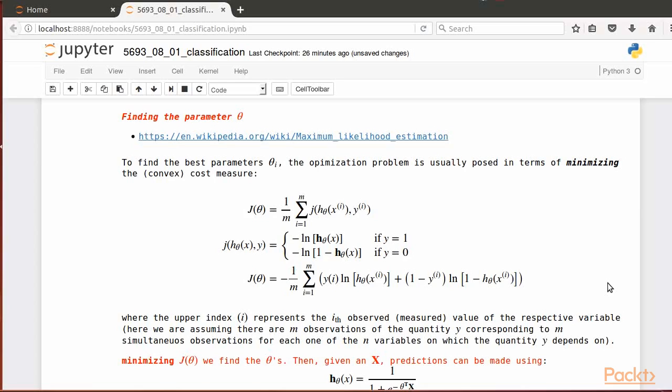In the case of the logistic regression we're considering, the problem reduces to minimizing the cost function j, shown here. This j cost function can be obtained via maximum likelihood estimation, which you could read more at this web link.